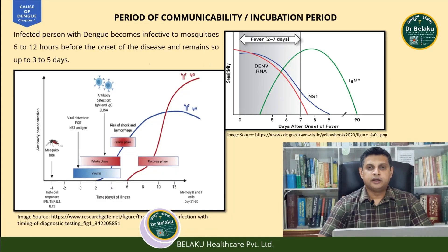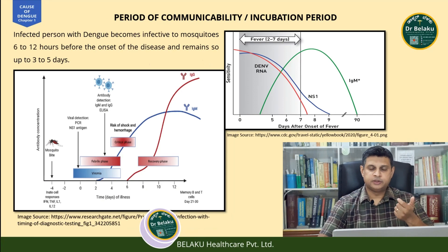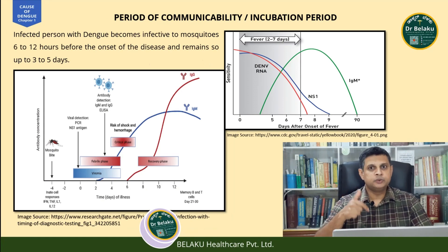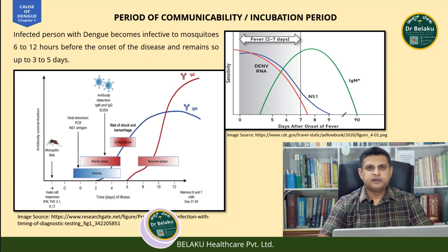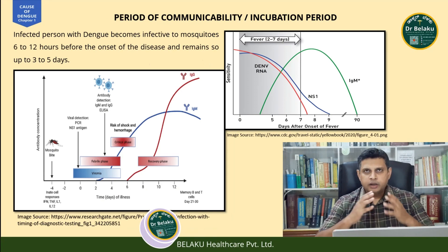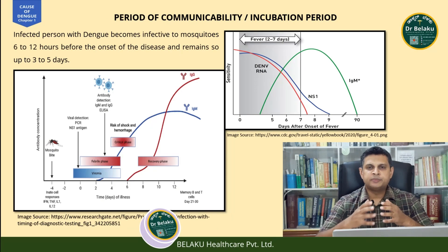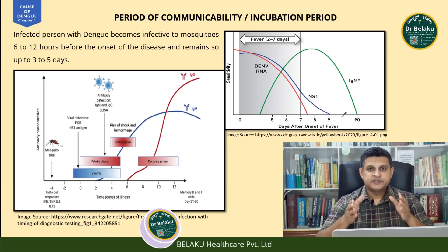Period of communicability and incubation period — what does this mean? Period of communicability means how long a person remains infective to the mosquito and to others. A person usually remains infective to an uninfected mosquito for a window period of about 6 to 12 hours. After that, they remain infective to others for about 3 to 5 days. After being infected, a person starts showing signs and symptoms of dengue about 7 to 8 days later — this is called the incubation period.